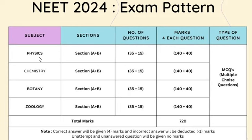In each subject, there are 45 questions total. Section A has 35 questions, and Section B has 15 questions. In that section there are 10 questions. So in one subject there are 45 questions total.